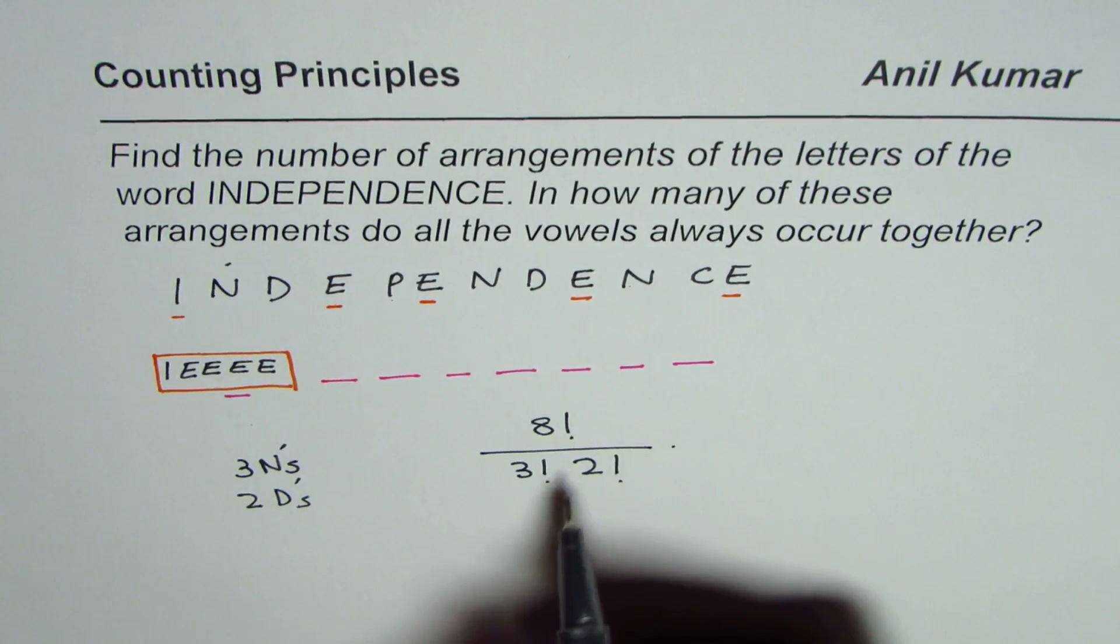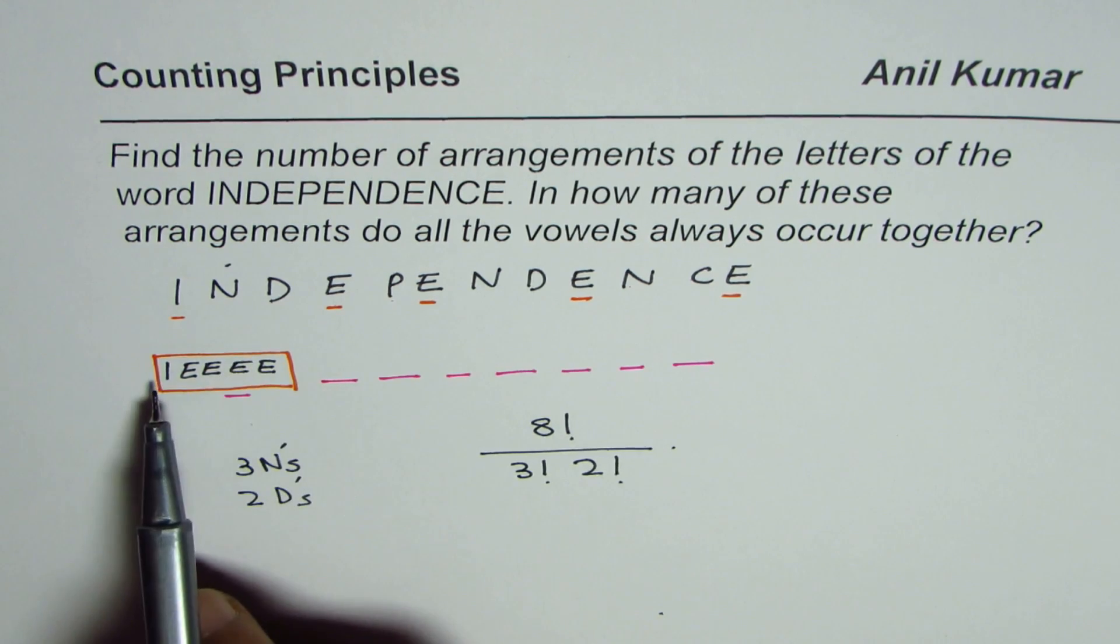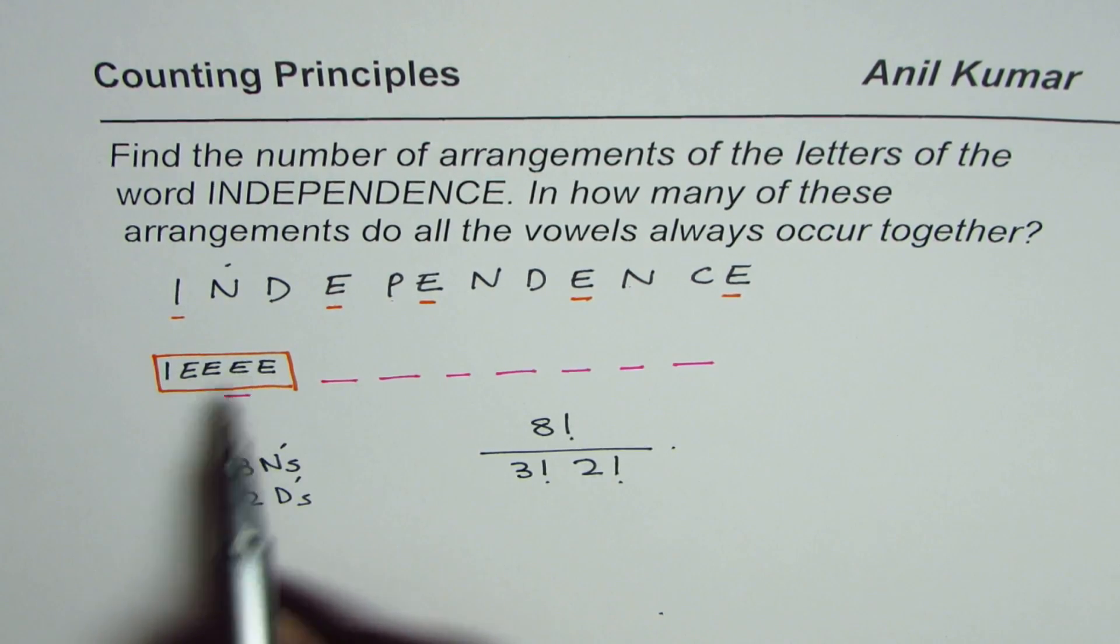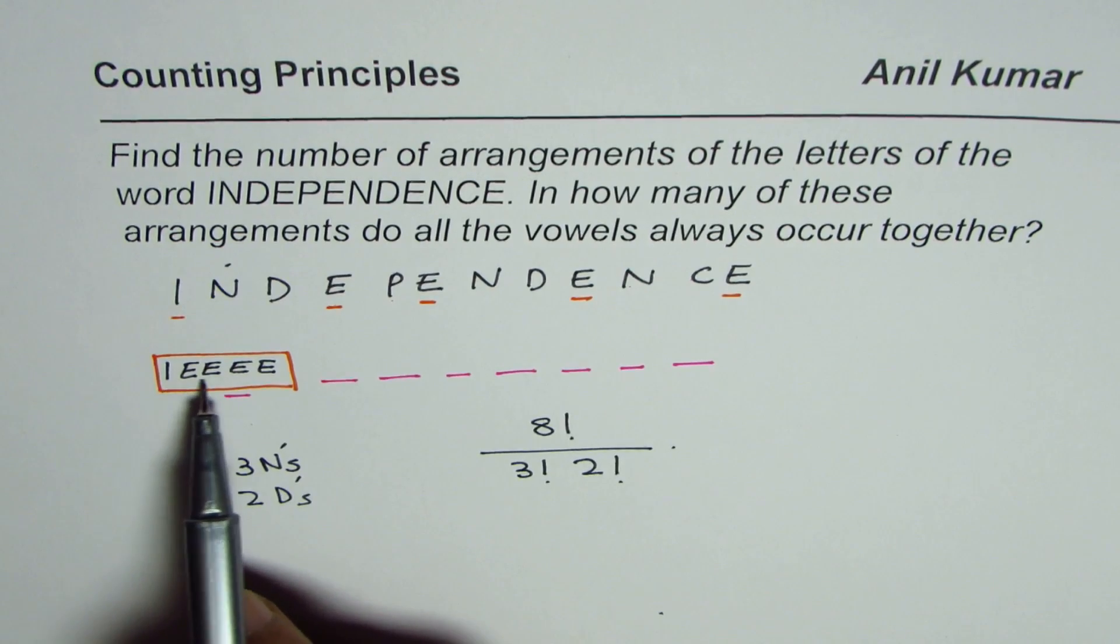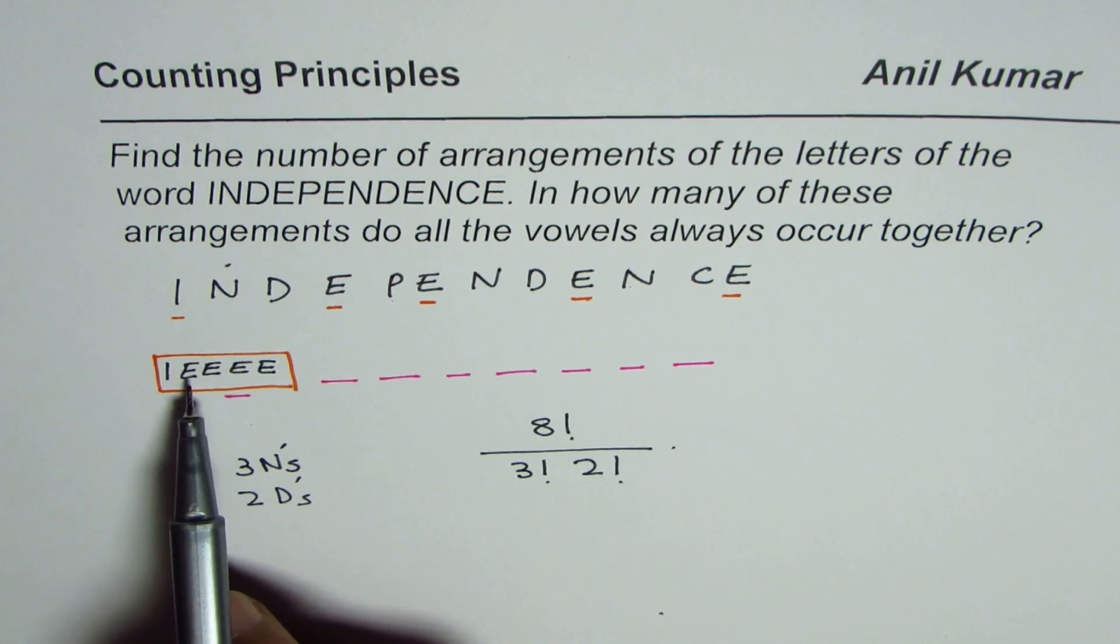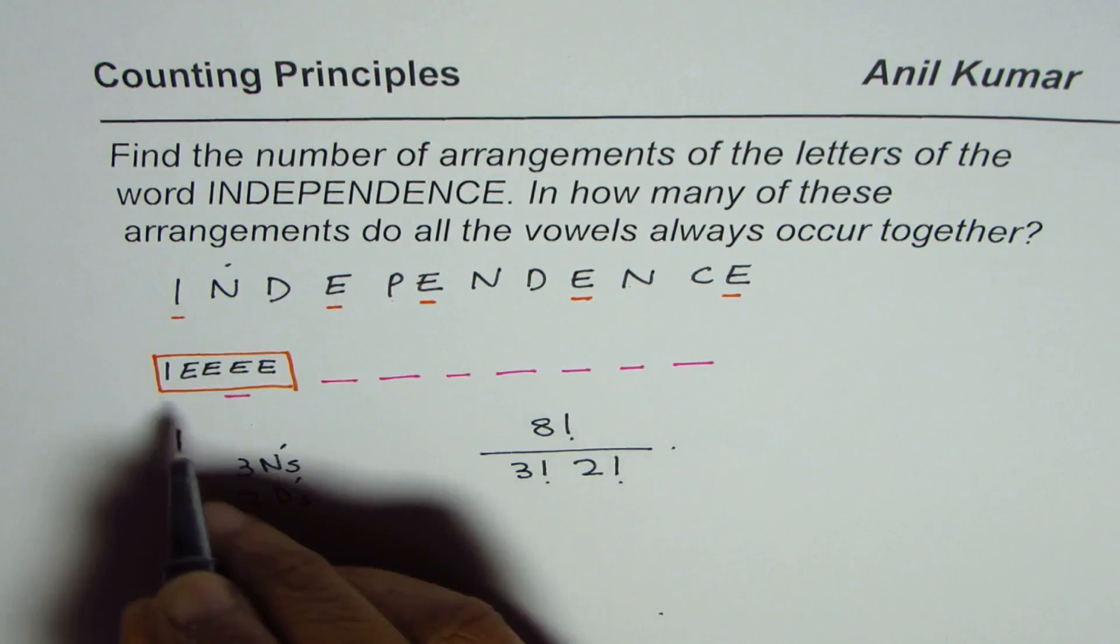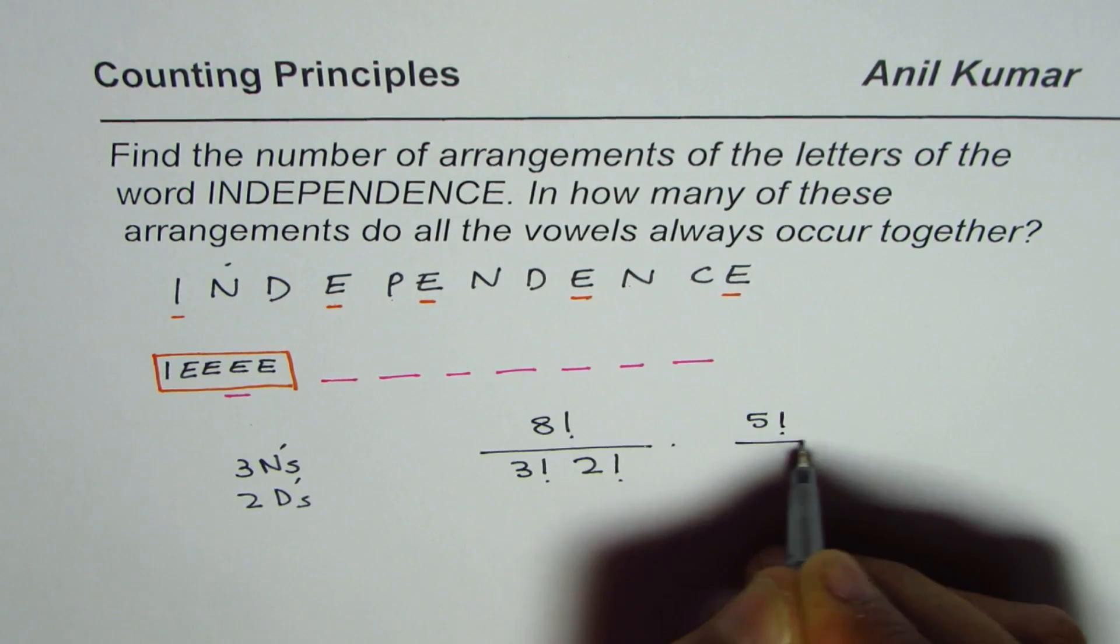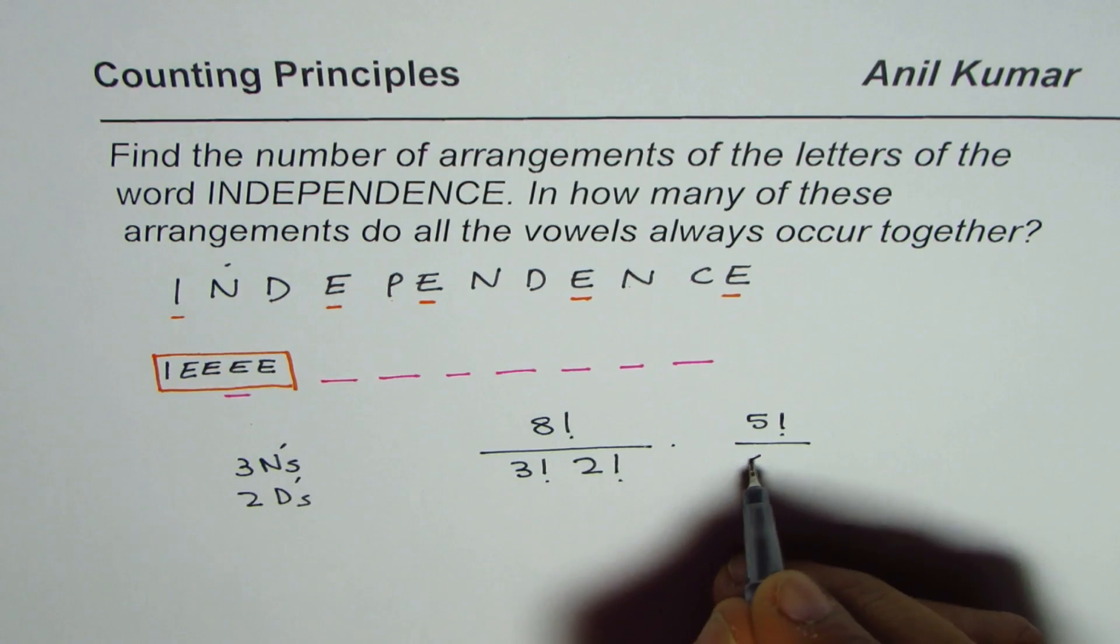Now, for each of this combination within this set, which we took set of vowels, they can also be arranged differently. So we have five of these letters, which could be arranged. And since there are four E's, number of ways it could be arranged is five factorial divided by four factorial.